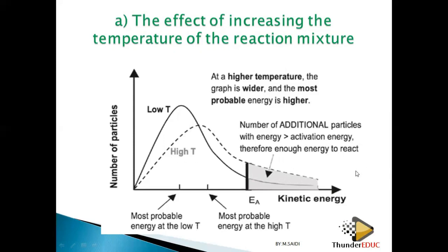That's why the high-temperature graph covers more particles when you draw the activation energy line — it covers fewer particles at low temperature. So more kinetic energy means more particles will react, more products will be formed, and the rate of the chemical reaction increases.